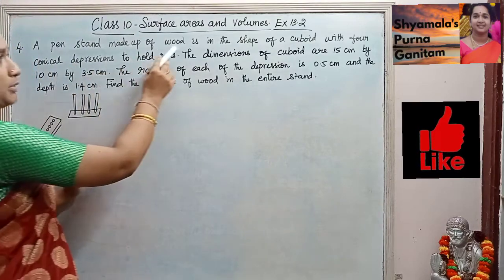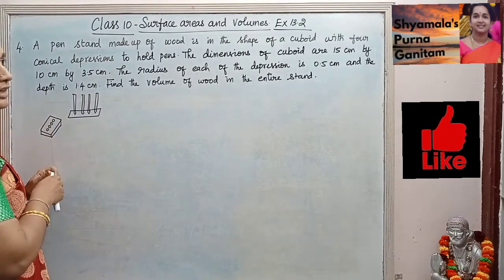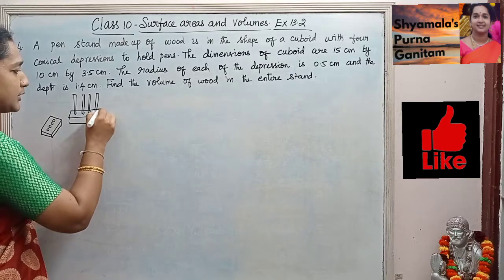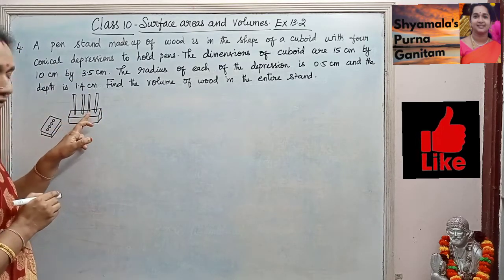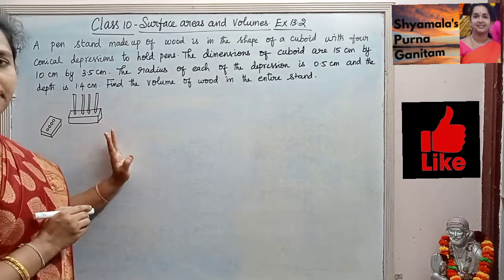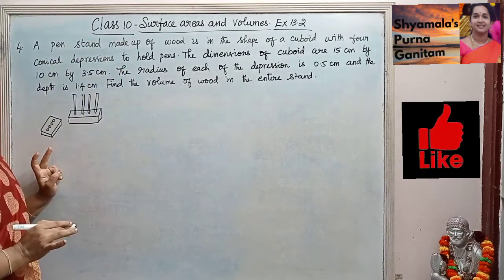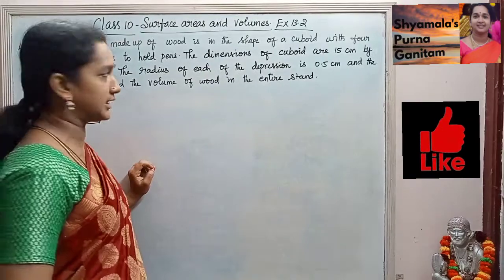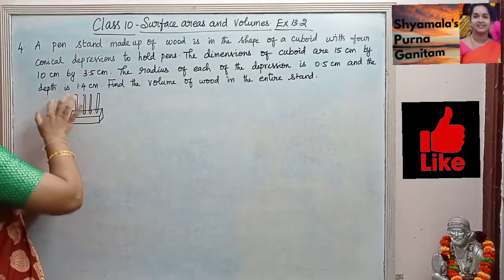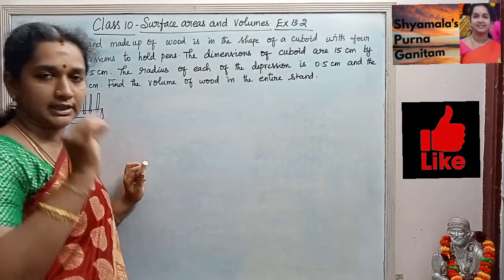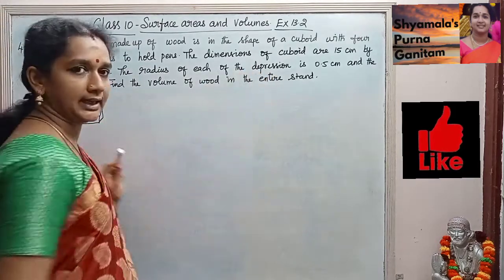A pen stand made up of wood is in the shape of a cuboid with 4 conical depressions to hold the pens. The dimensions of the cuboid are 15, 10, and 3.5. The radius of each of the depressions is 0.5 cm and the depth is 1.4 cm. Find the volume of the wood in the entire stand.